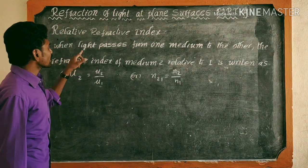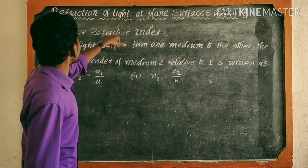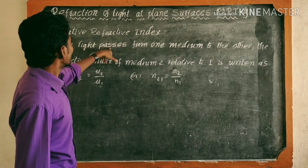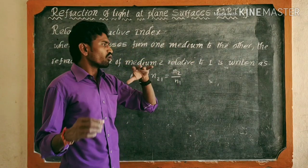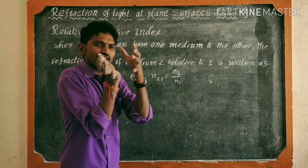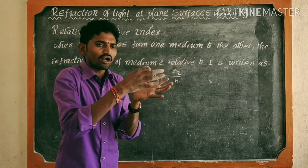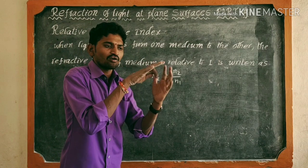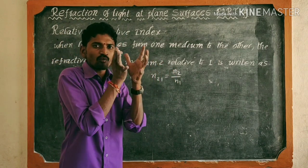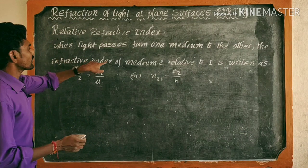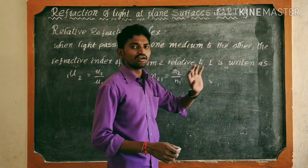So what is the relative refractive index? When light rays pass from one medium to another medium — for example, air to water, water to glass, glass to water, water to air, air to glass — sometimes one medium to another medium — we use the refractive index of medium two relative to one.